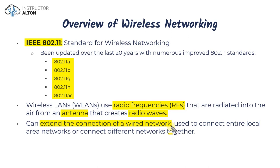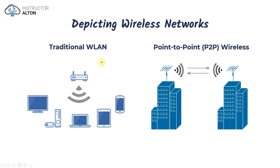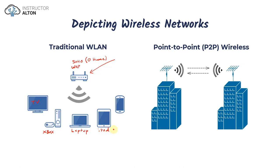Let's look at the difference between a traditional wireless LAN and a point-to-point wireless LAN. The traditional wireless LAN, which most people are familiar with, has a wireless access point connecting to a bunch of devices — for example a SOHO device at home or at a coffee shop. Devices that connect include smart TVs, PlayStation or Xbox, laptops, desktops, tablets, iPads, and smartphones.